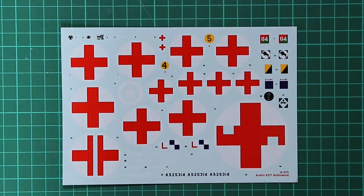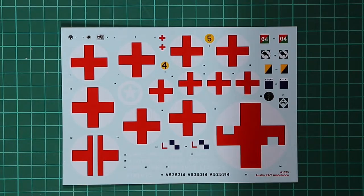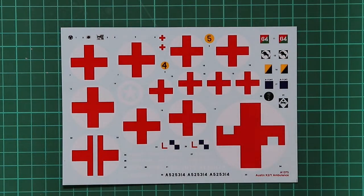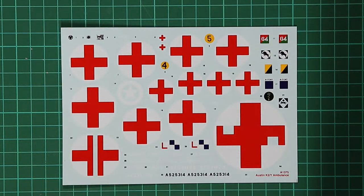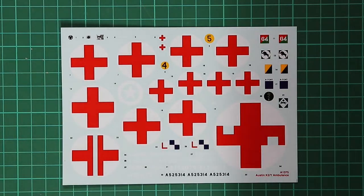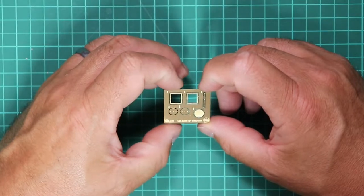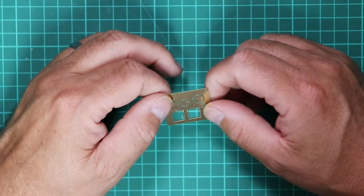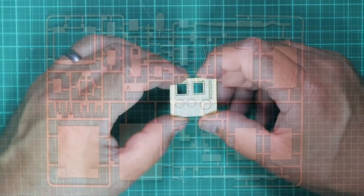Moving on to the decal sheet, it looks to be well printed but isn't Cartograph, so it'll be interesting to see how the red cross markings go over a darker color background. Nonetheless everything, all the insignia and badges look to be well printed. Thankfully there's no stencil data as you would find in an aircraft. If you look closely on the decal sheet I believe there's some bonus items there that aren't mentioned in the instruction booklet. The last thing to note in the box is a small etch fret for some of the smaller parts that we'll see during construction of the model.